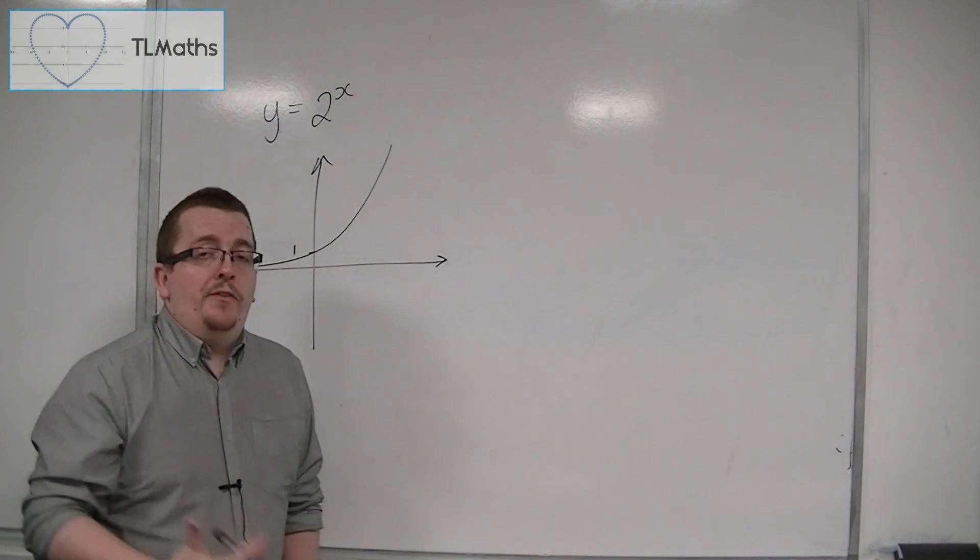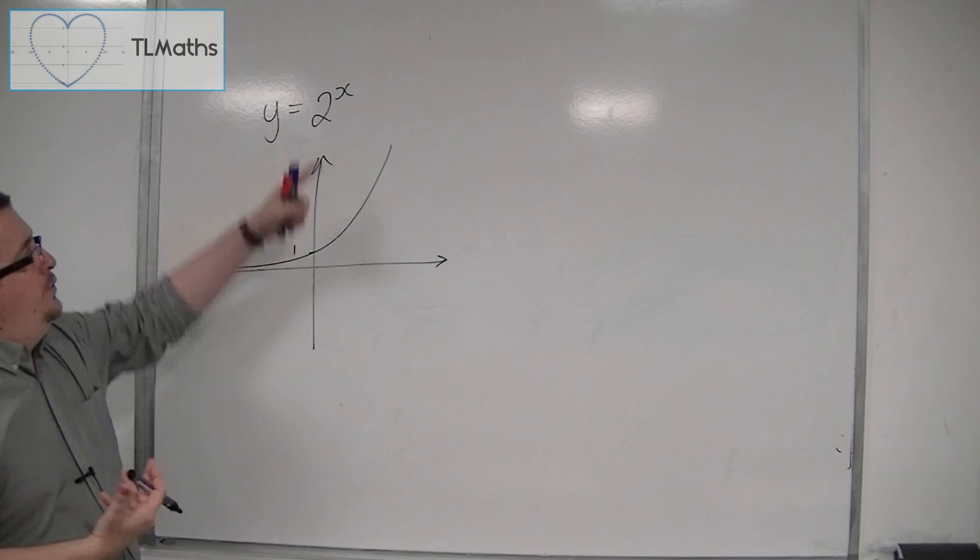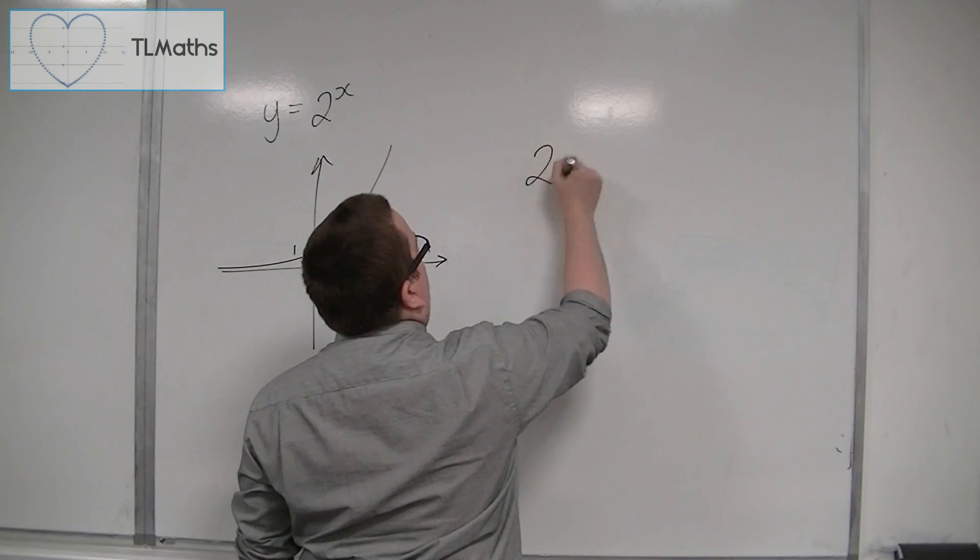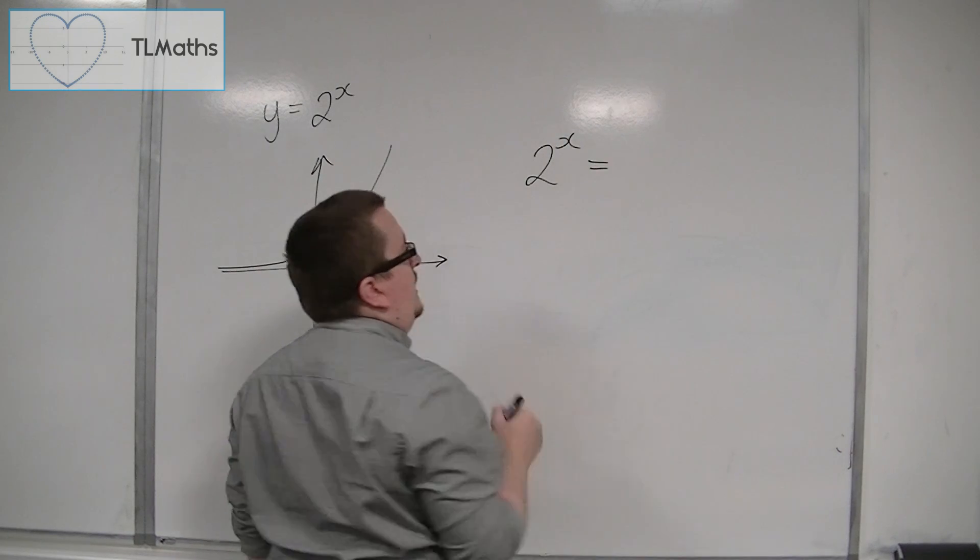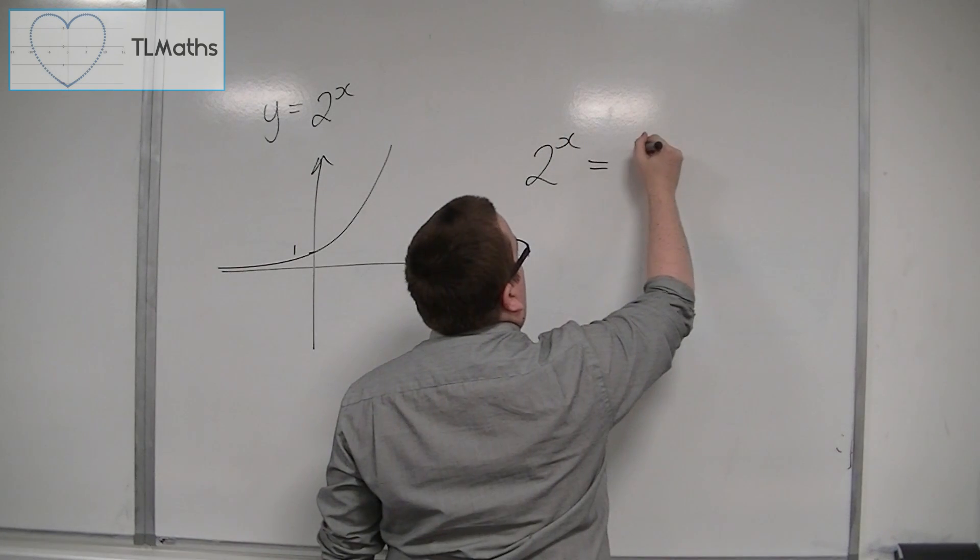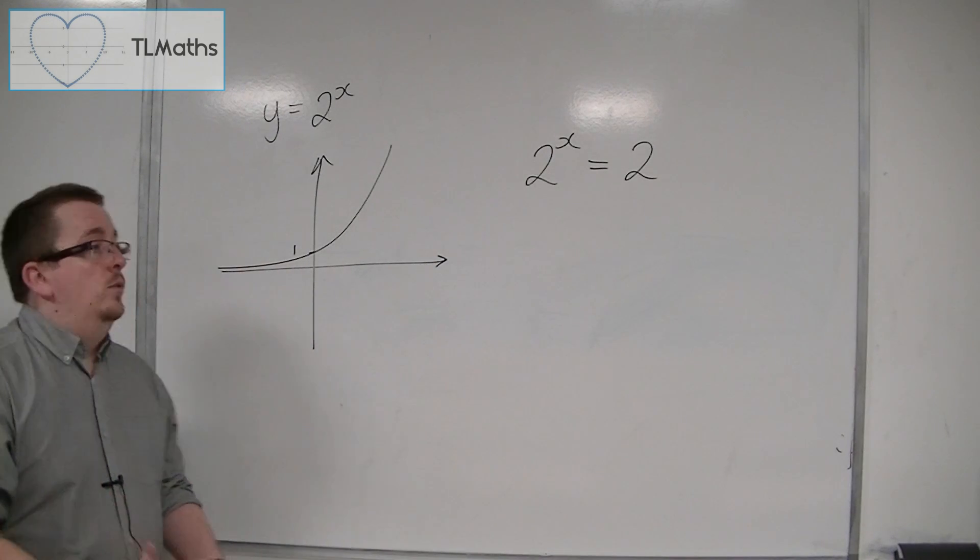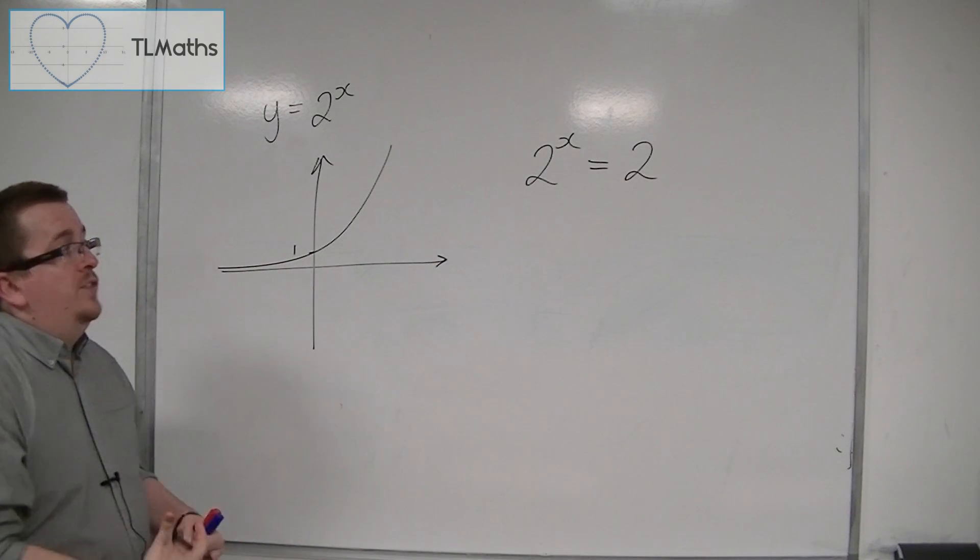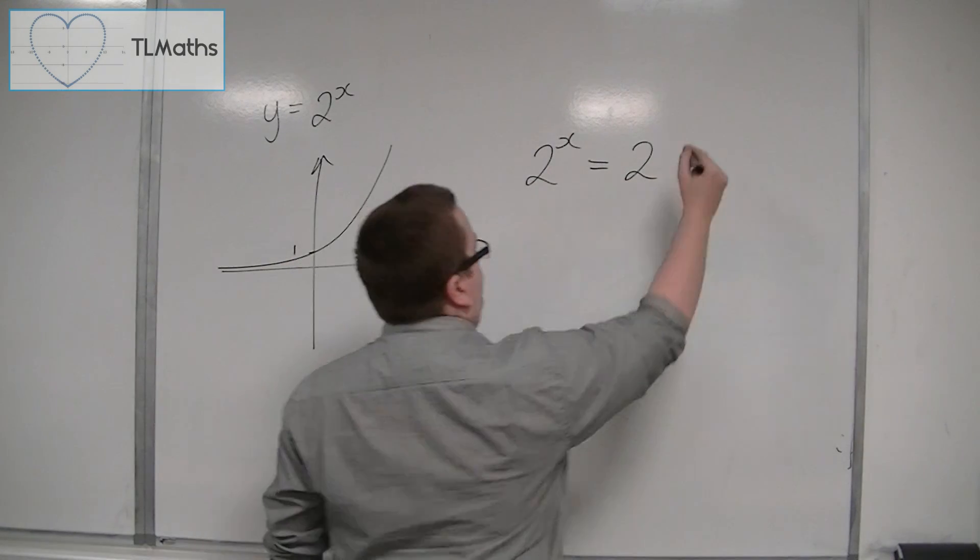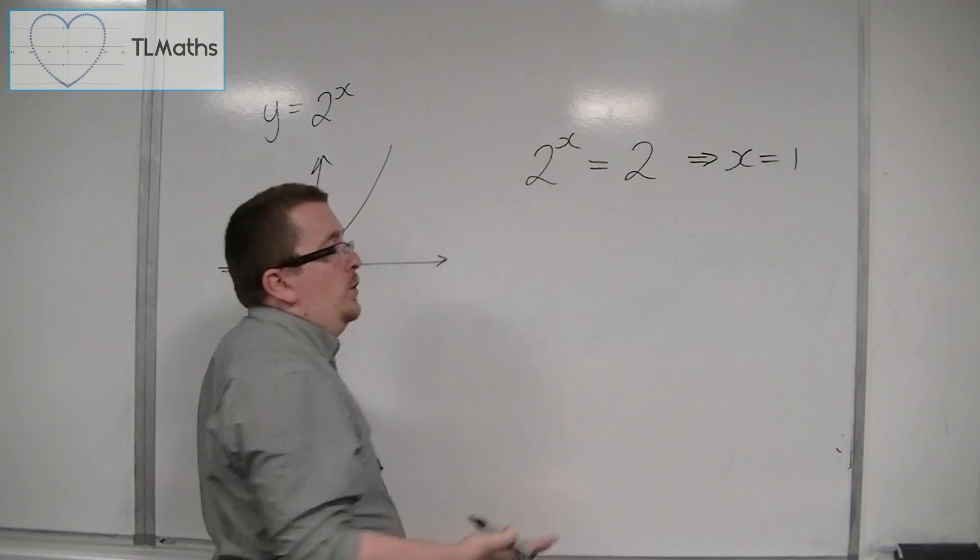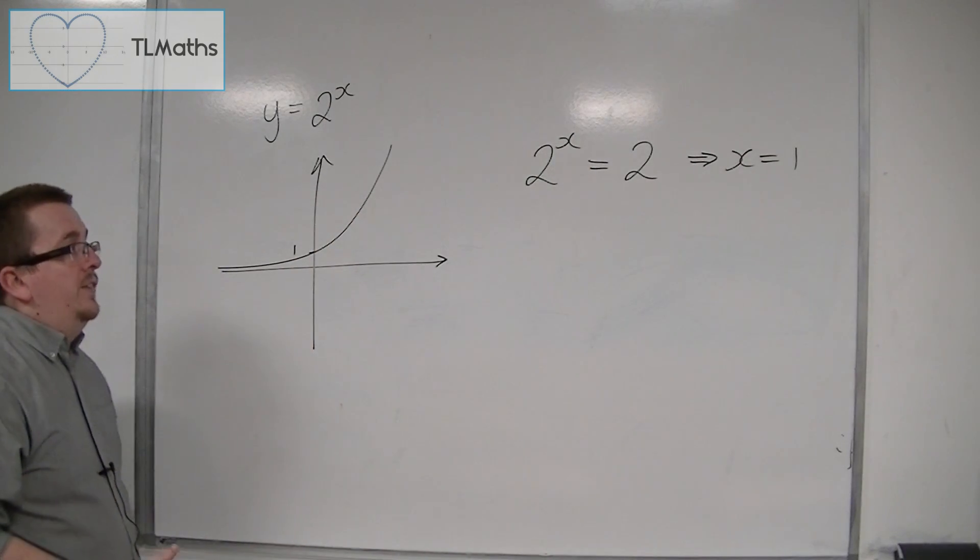Now, if I wanted to solve an equation using something like this, so if I was going to look at 2 to the x is equal to 2, for example, then I know that 2 to the x is equal to 2 when x is equal to 1. So I know that 2 to the 1 is equal to 2, so that makes sense.